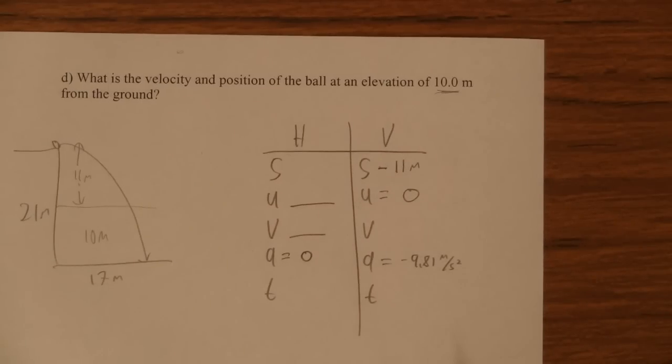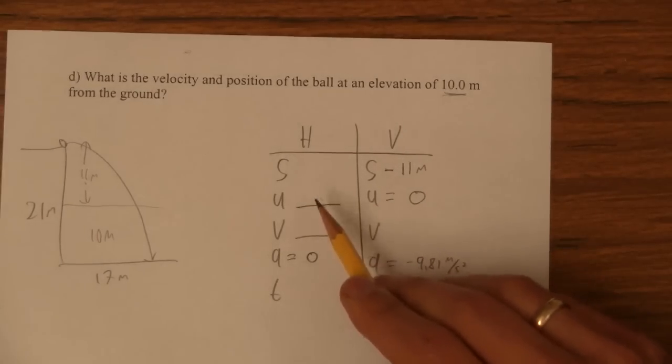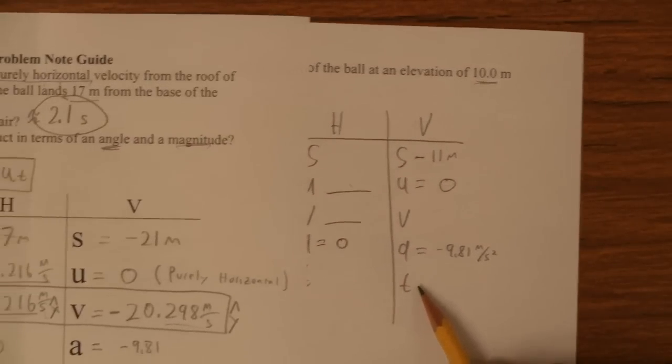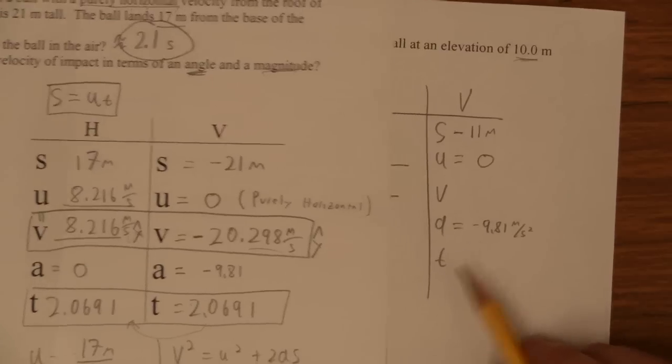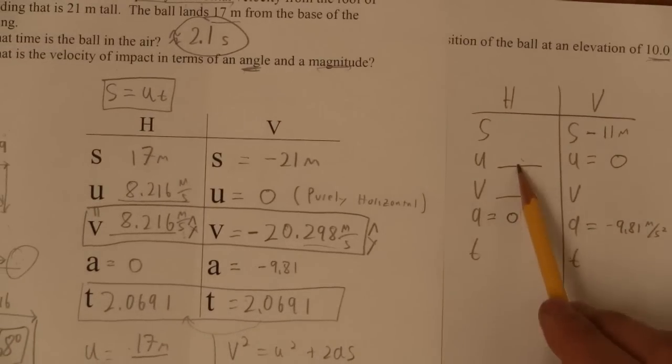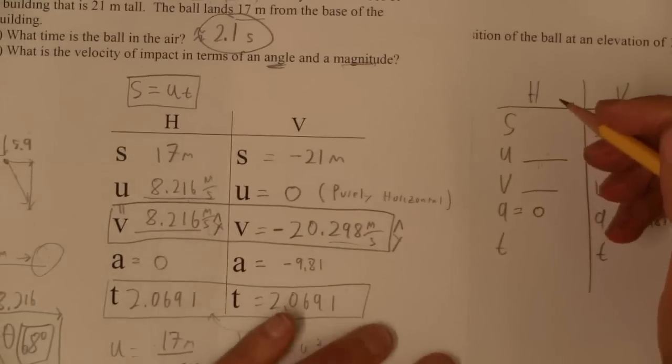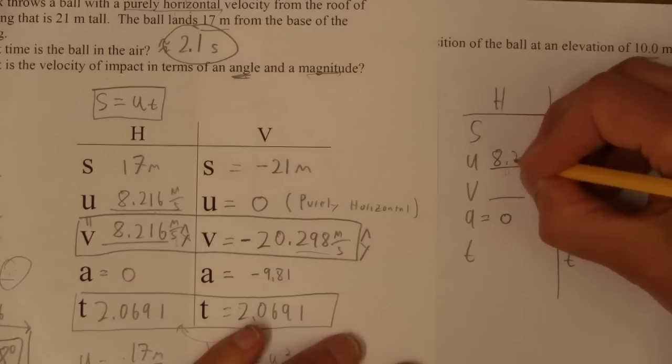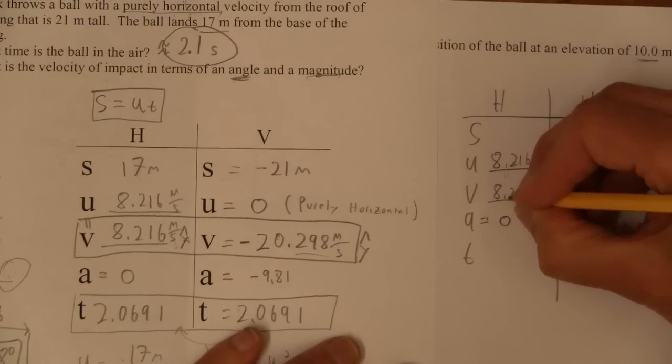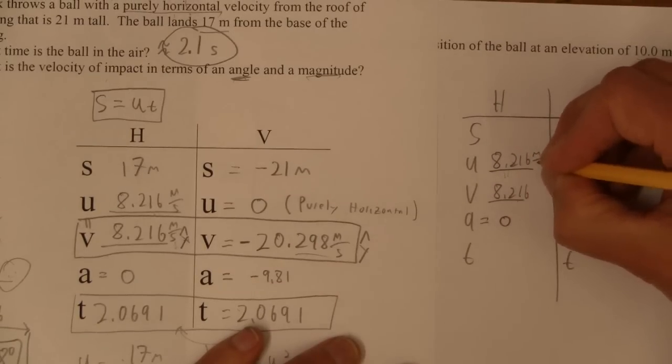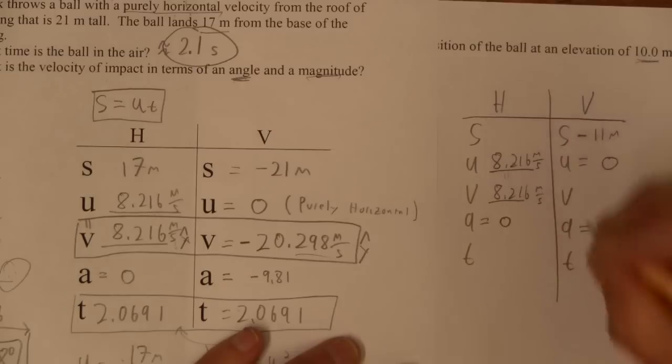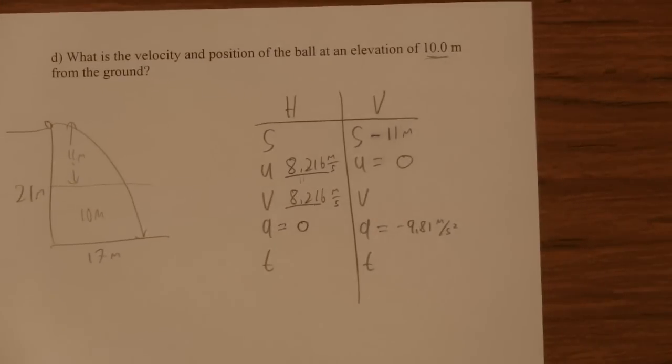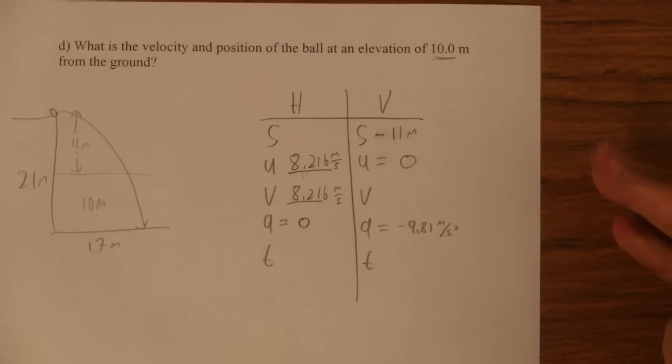And then these guys we know from the previous problem. I'm guessing that those velocities are these guys here because it's the same launch. So this is 8.216 approximately meters per second. And now I'm ready to solve. I think we can solve this thing.